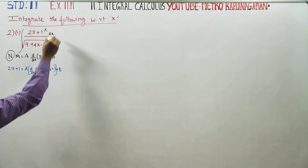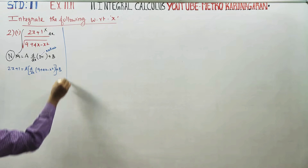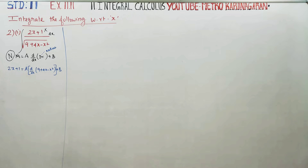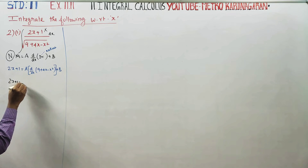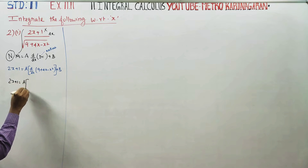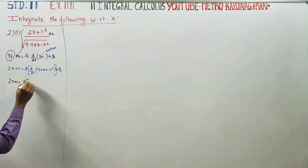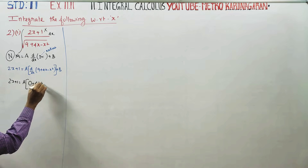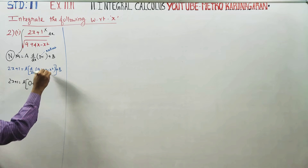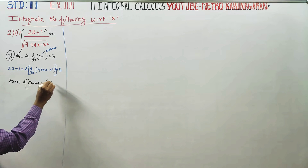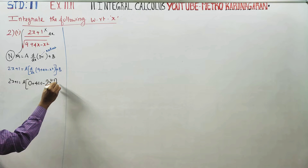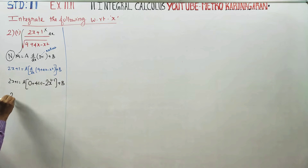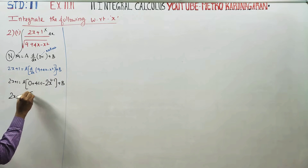So: d/dx of (9 + 4X − X²): differentiate 9 → 0, differentiate 4X → 4, differentiate X² → 2X, giving (4 − 2X). Therefore: 2X + 1 = a(4 − 2X) + b.